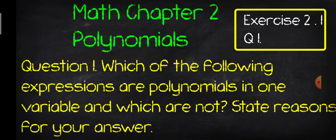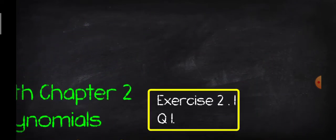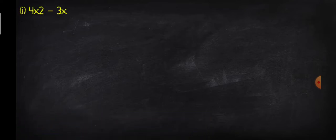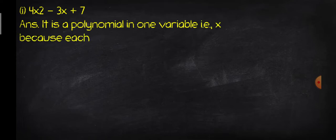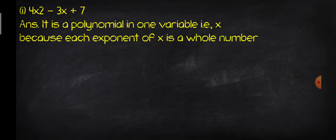We will tell you the reasons. Let's look at the answer. What is the first part? It involves the variable x. x is a polynomial here because each exponent of x is a whole number — every exponent of x is a whole number.